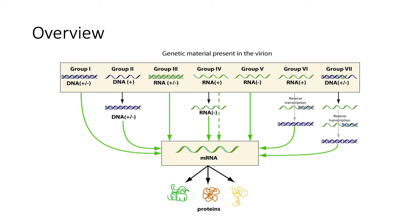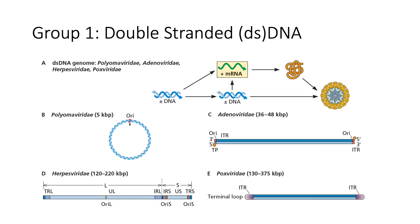Let's start with the DNA viral genomes — groups one, two, and seven. Remember that all DNA viruses have to go through double-stranded DNA. Group one is already double-stranded DNA, so it can be used as-is. Group two is single-stranded DNA, so it must become double-stranded first. Group seven is gapped double-stranded DNA, so that gap must be filled before we have a functional double-stranded DNA to work with to get to mRNA.